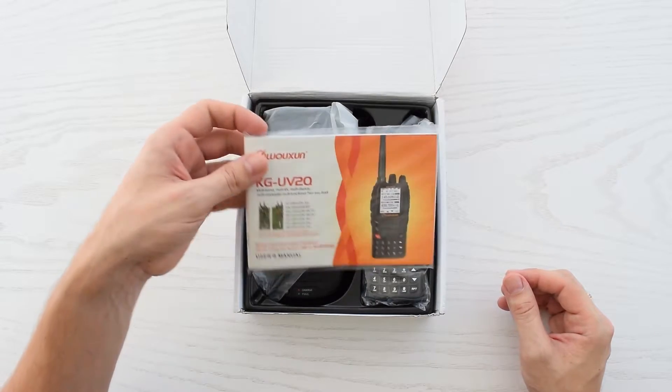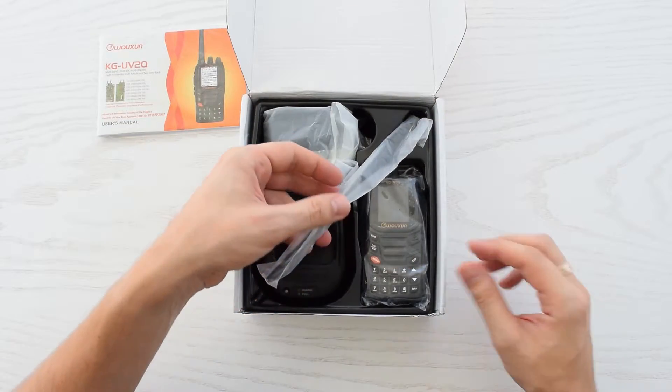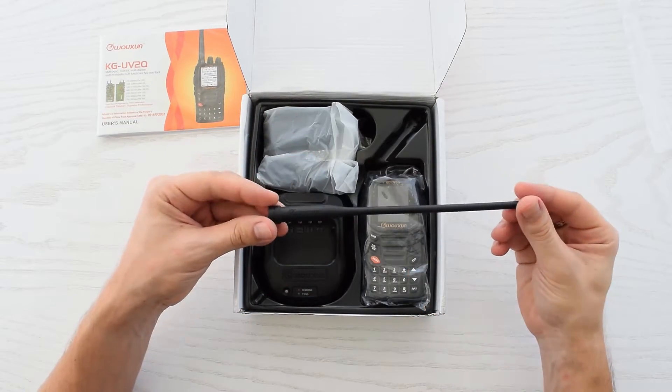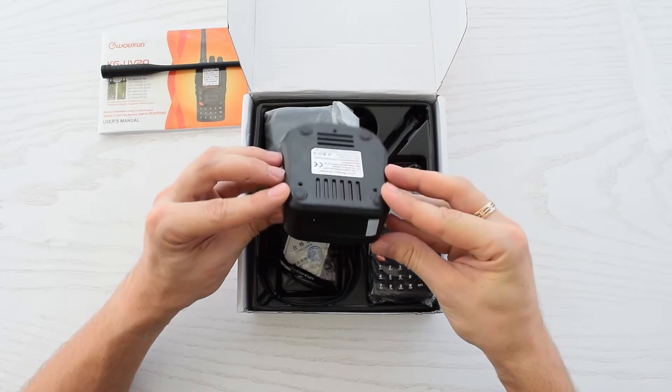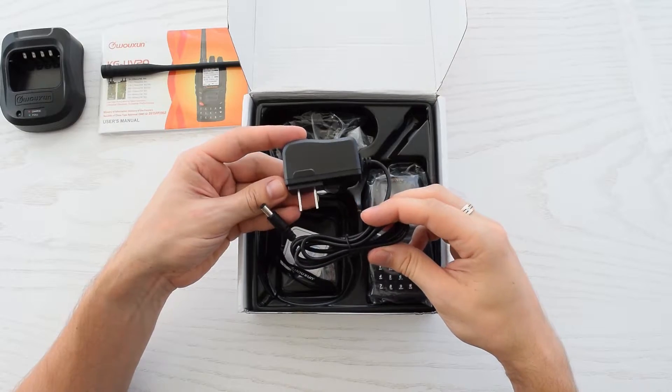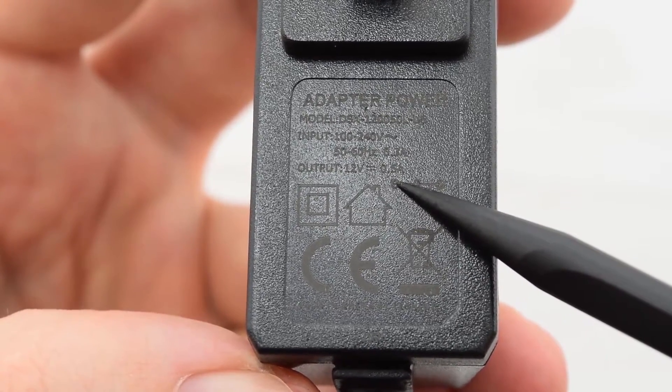So inside the box you've got a manual, you've got multiband high-gain antenna, we'll test it later, you also get a charger, AC adapter, 12V, 0.5A.